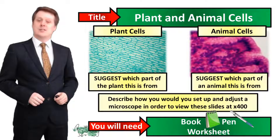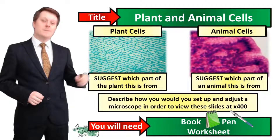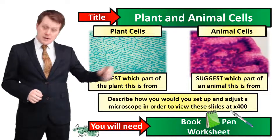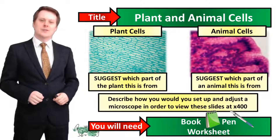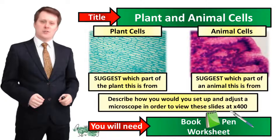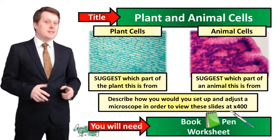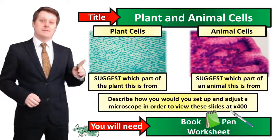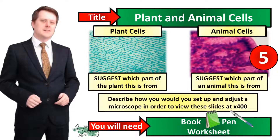For your starter activity I would like you to suggest what part of the plant this microscope slide is from, and I would also like you to suggest what part of the animal that microscope slide is from. I would also like you to describe how you would set up and adjust the microscope in order to view these slides at a times 400 magnification. I'm going to put 5 seconds on the clock and if you need more time pause the video and when you're finished we'll go through the answers together.